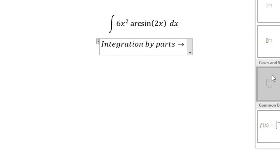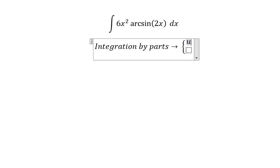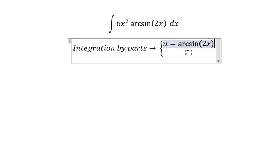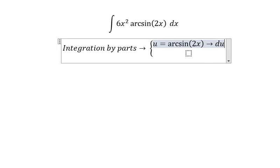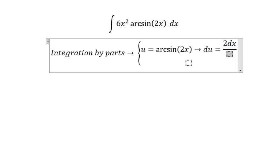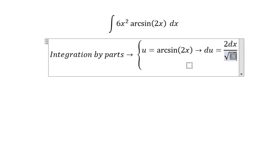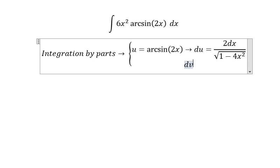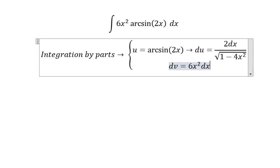So we have u equal to arcsin(2x), and du is 2dx over the square root of 1 minus 4x squared. For dv we have 6x squared dx, so v equals 2x to the power of 3.